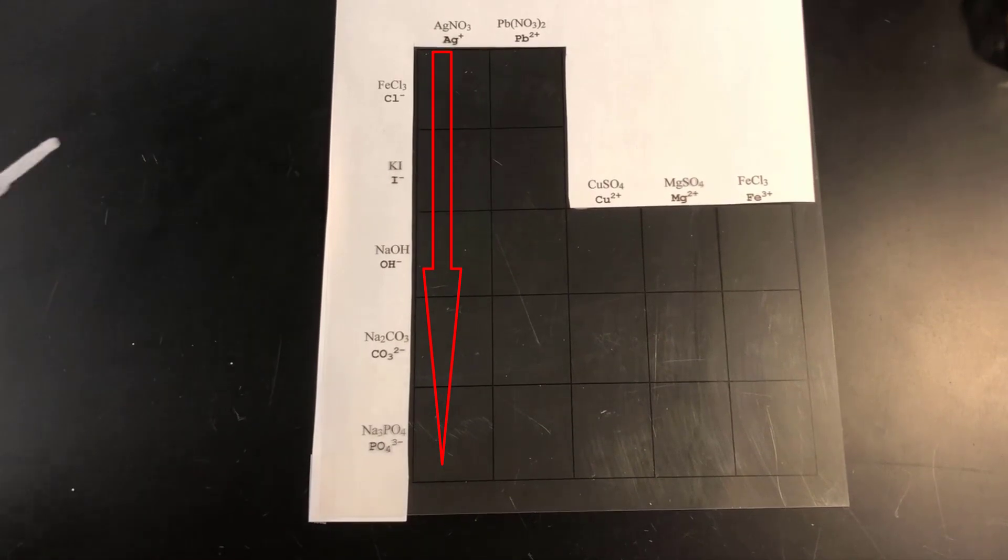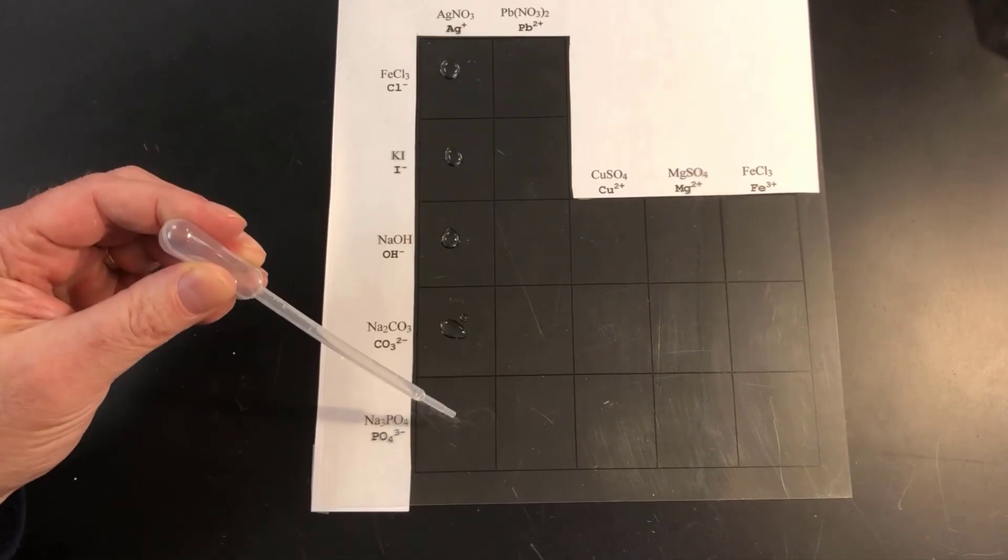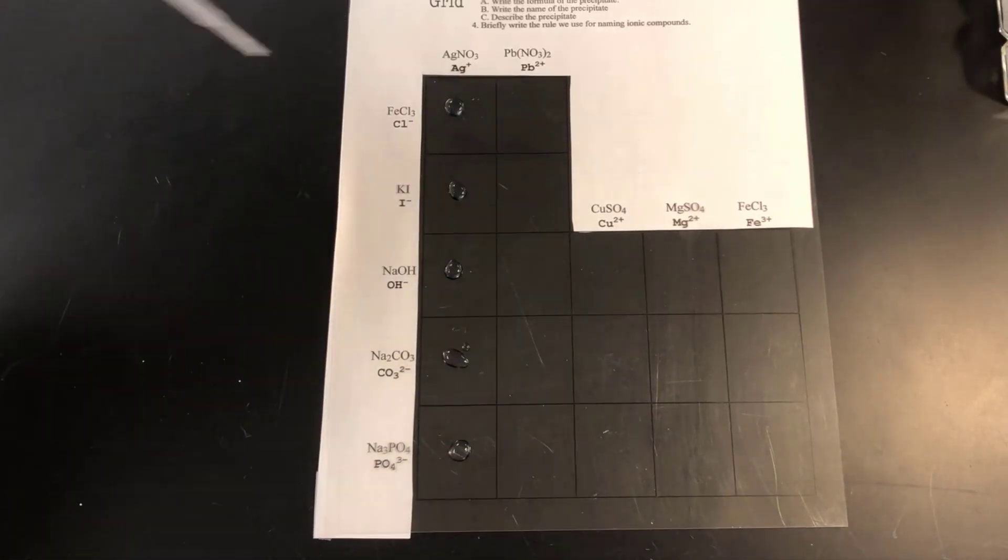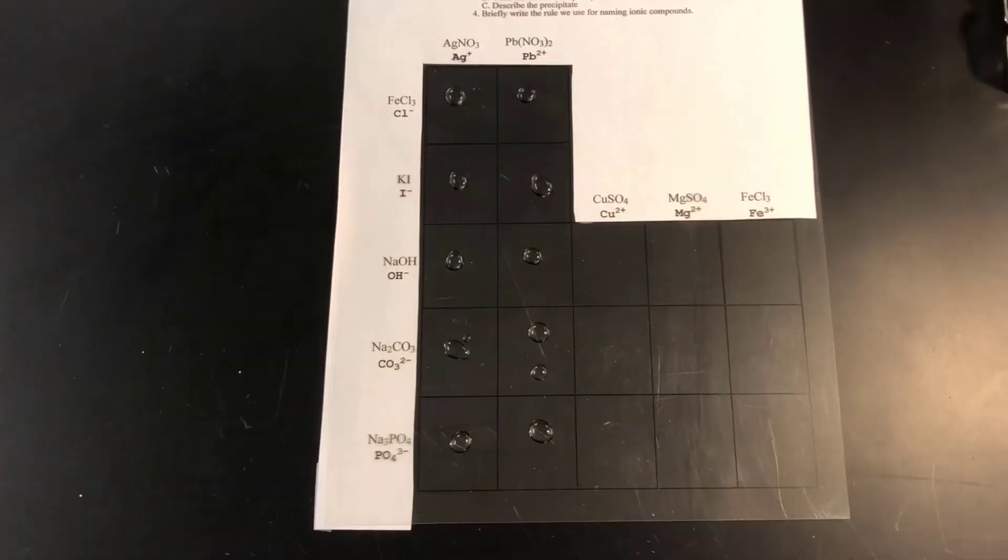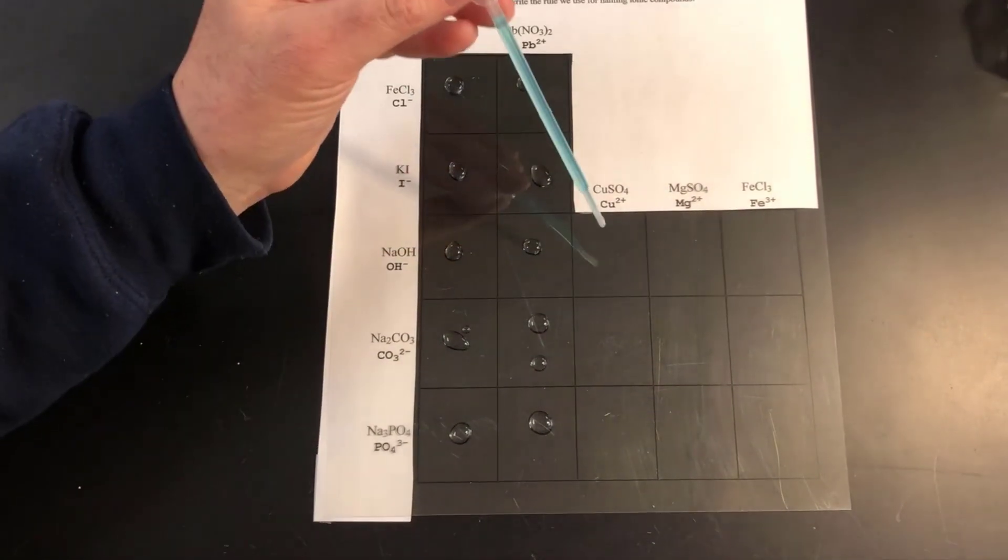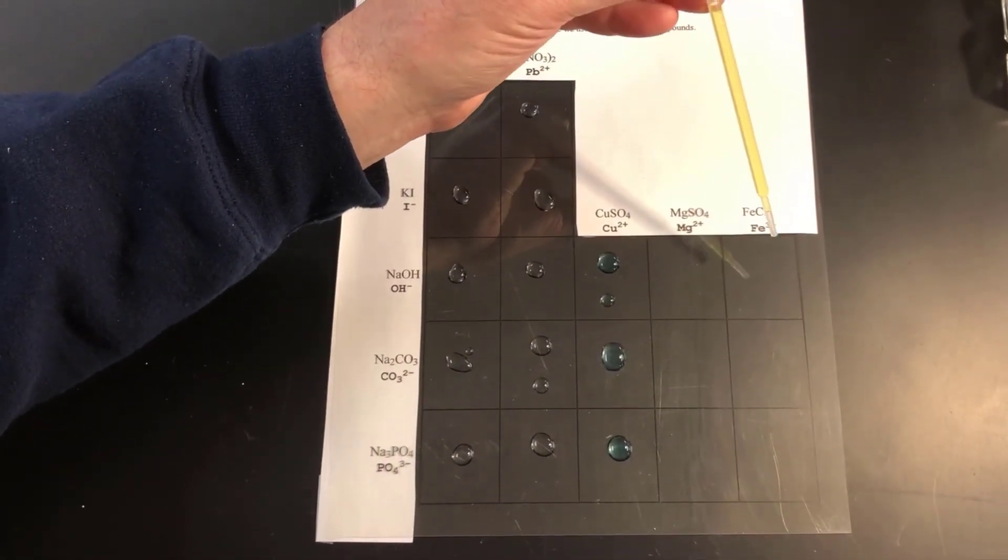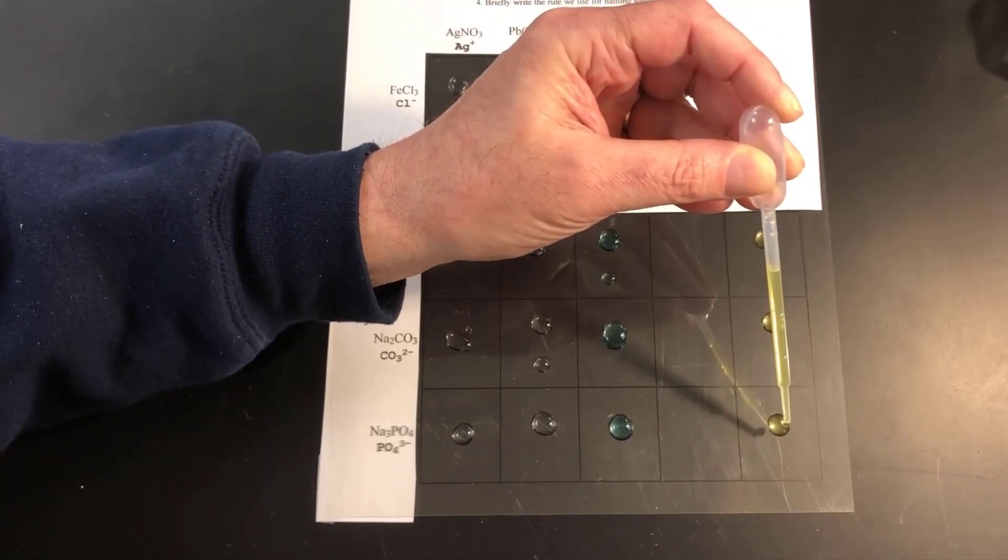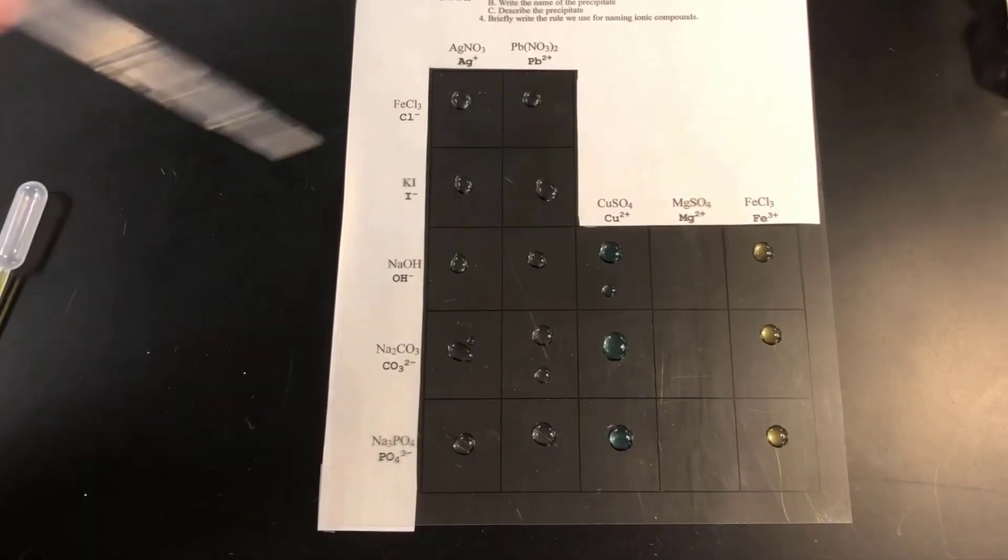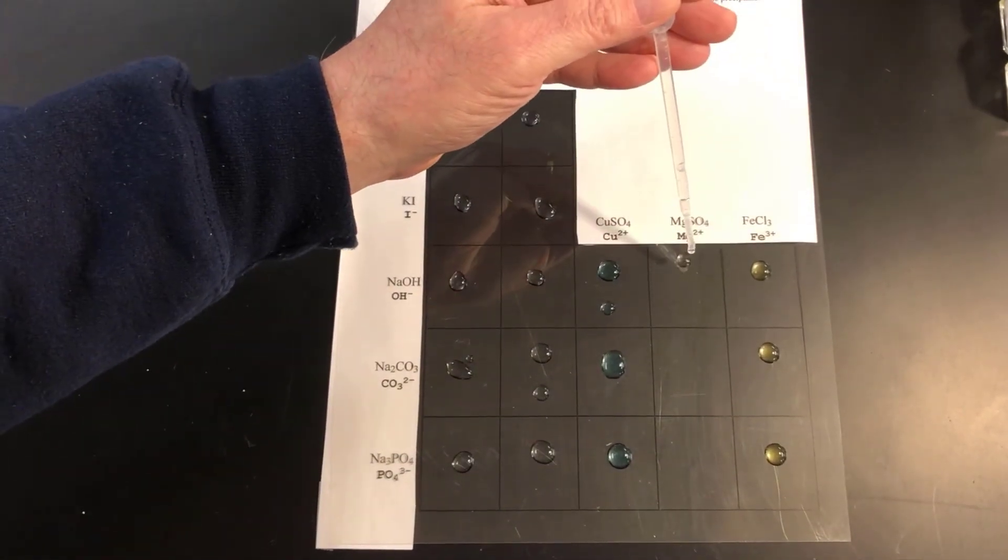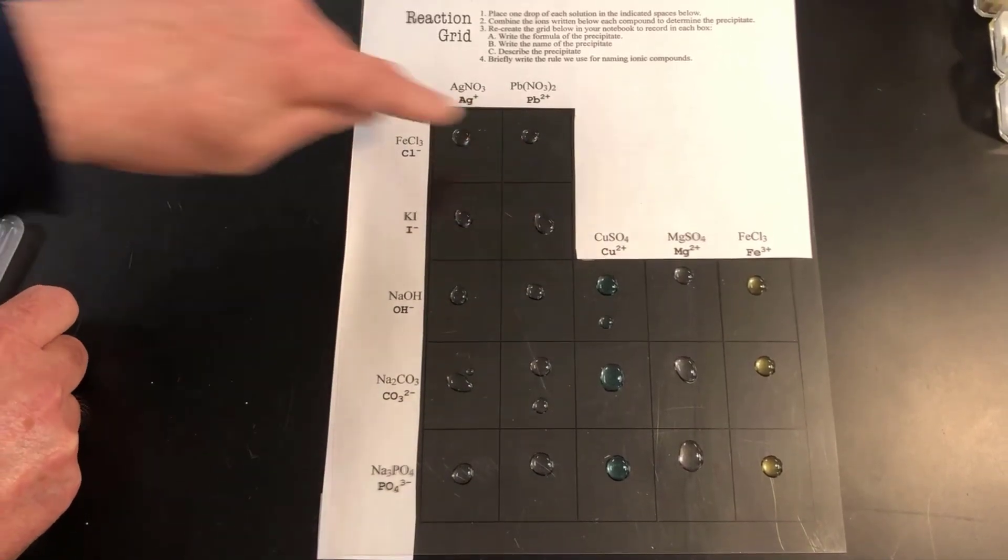Okay, so the first one is AgNO3. The next one is Pb(NO3)2. The next one is CuSO4. And the next one is FeCl3. Kind of skipped one, but the FeCl3, I'm going to put that aside because we're going to use it again. Here's MgSO4.